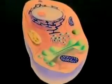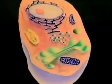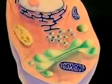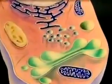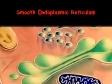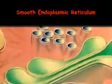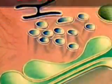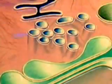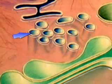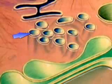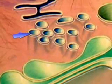Another type, called smooth endoplasmic reticulum, has no ribosomes attached to its surface, and thus appears much smoother than rough ER. Like rough ER, smooth endoplasmic reticulum serves as a storage area, mainly for proteins that will later be exported out of the cell.